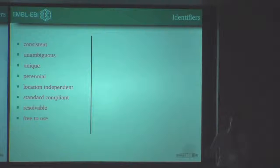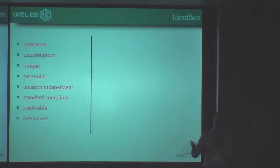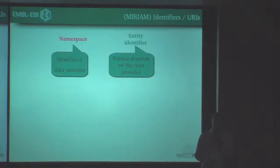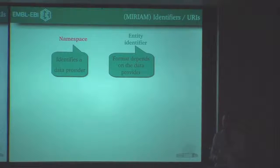Taking all these points together, I have a list of characteristics any useful identifier should have. I basically wrote them down — things like standard compliance, resolvability, free to use, and so on. When we looked around, basically everything available at the time did not really fit the bill with all of these characteristics.